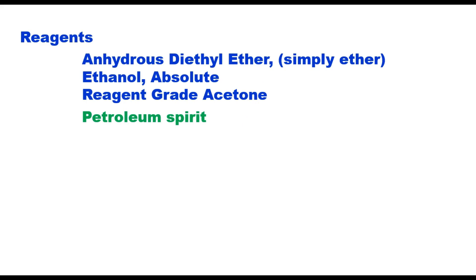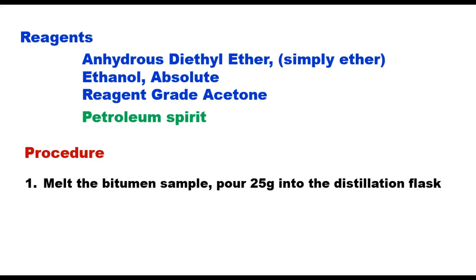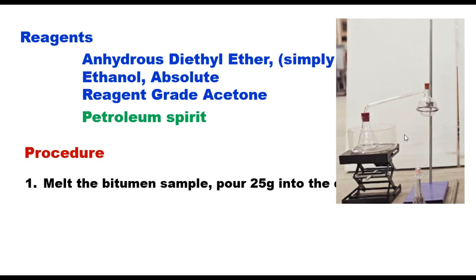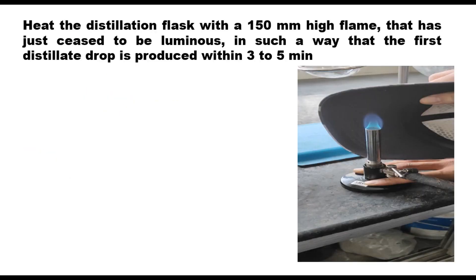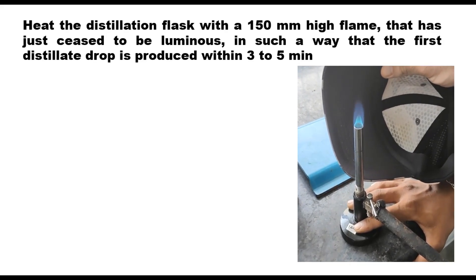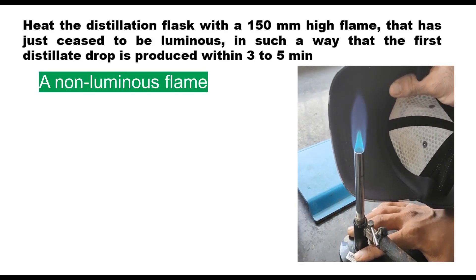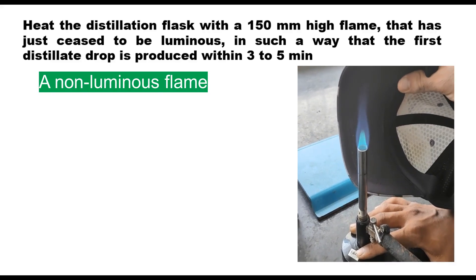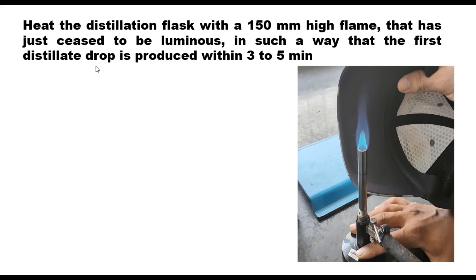The stepwise procedure is as follows. First, melt the bitumen sample and take about 25 grams of the bitumen into the distillation flask. Then heat this flask with a 115 mm high flame that has just ceased to be luminous — meaning the flame should not turn yellow. Distillate it so that the first distillation drop is produced within 3 to 5 minutes.